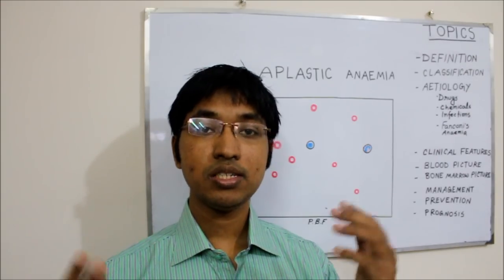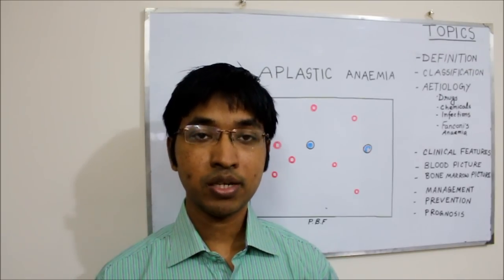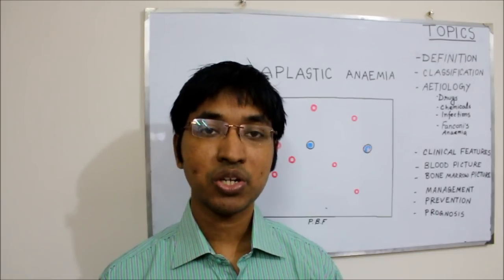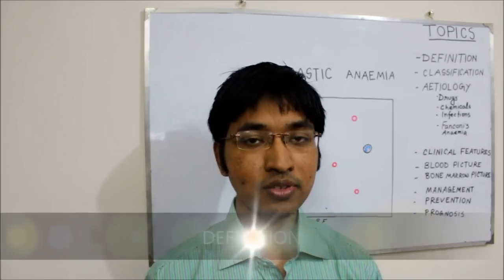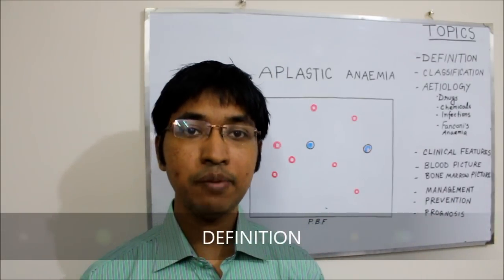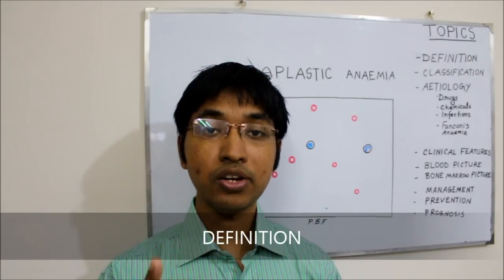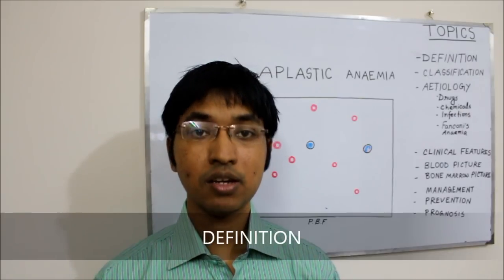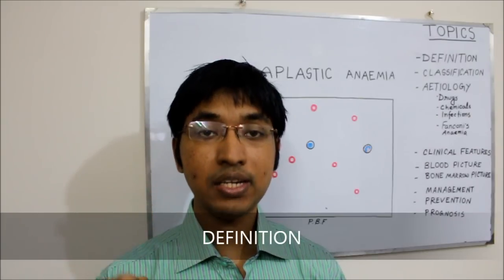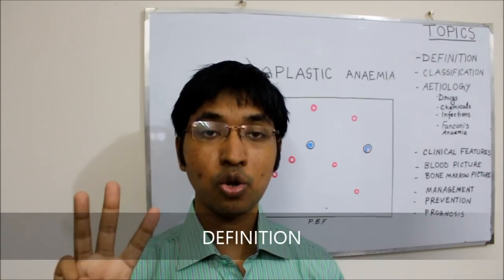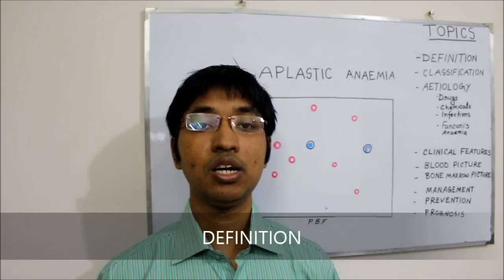First question: what is aplastic anemia? Aplastic anemia can be defined as the disorder of unknown etiology characterized by anemia, leukopenia and thrombocytopenia resulting from aplasia of the bone marrow.